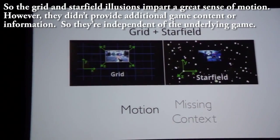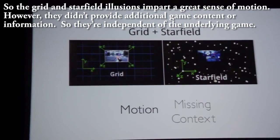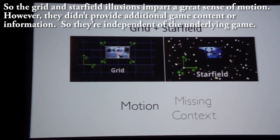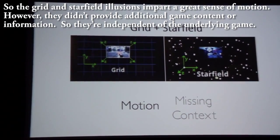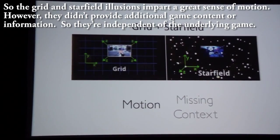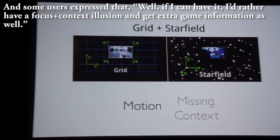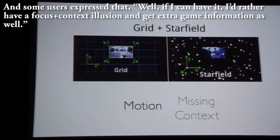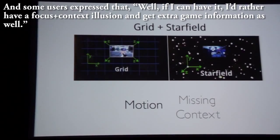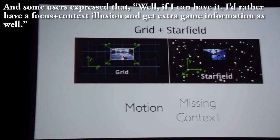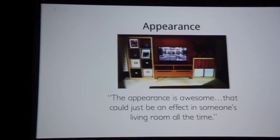The grid and star field illusions imparted a great sense of motion; however, they didn't provide additional game content or information, so they're independent of the underlying game. Some users expressed that if they could have it, they'd rather have a focus plus context illusion and get extra game information as well.